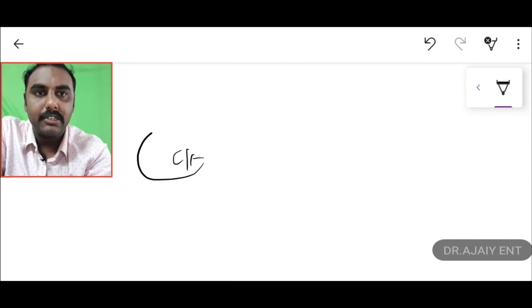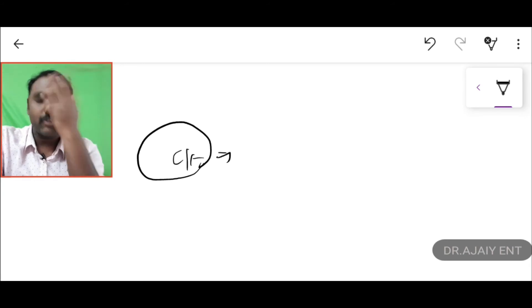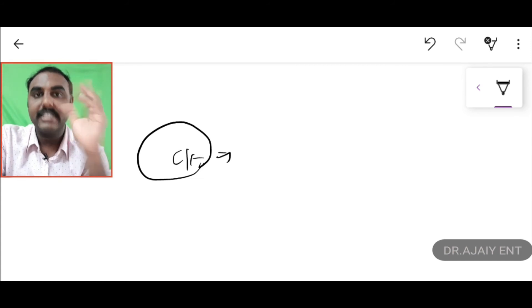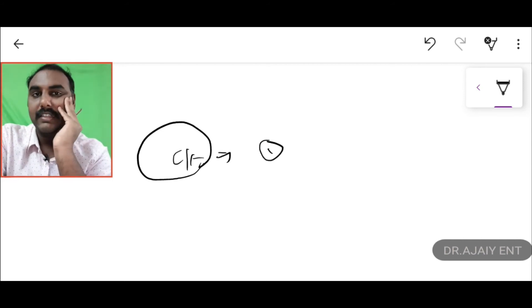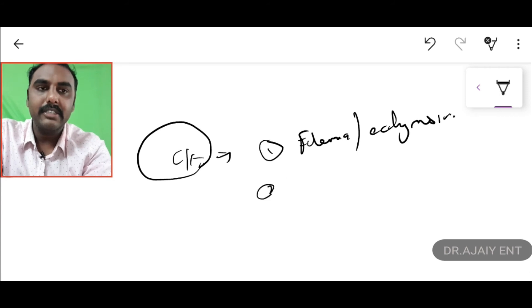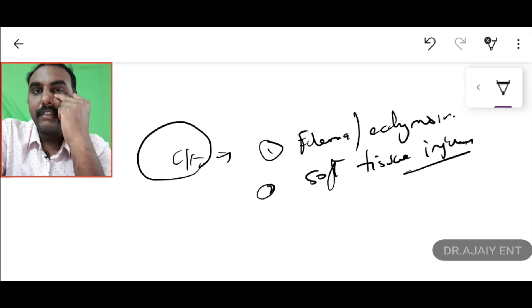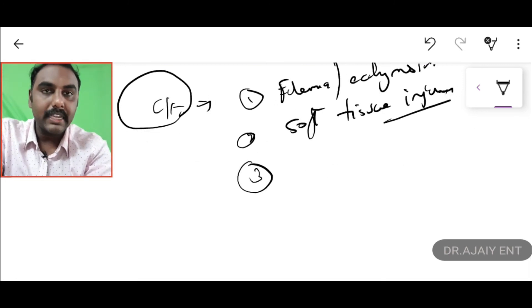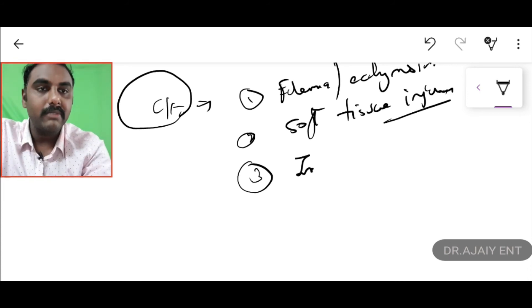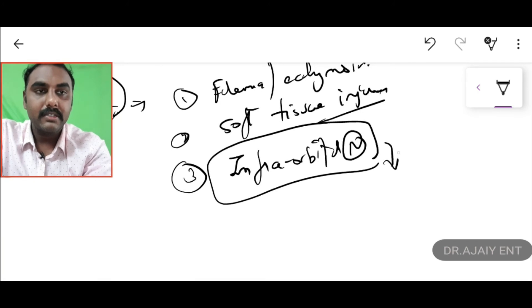What are the clinical features in a Le Fort fracture? The patient would have been in a severe road traffic accident, following which there will be soft tissue injuries over the face, along with severe edema and ecchymosis over that area. In Le Fort Type 2 and Type 3, the fracture line involves the orbital area, so there can be involvement of the infraorbital nerve — as we discussed in blowout fractures — leading to loss of sensation over the areas supplied by that nerve.